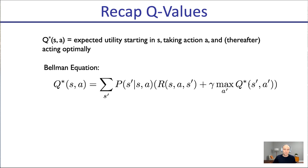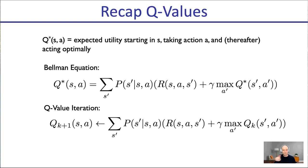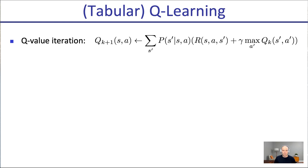Specifically, the Q-value for state S and action A is the expectation — the sum weighted by probability of state S-prime given state S and action A — of the reward on the immediate transition plus gamma times what we'll get from state S-prime onwards. That's a recursive thing: Q-star tells us in state S-prime, if we take the optimal action, we get the max over Q-star(S-prime, A-prime). Q-value iteration recursively computes these values, initializing Q-zero to all zeros and converging to Q-star.